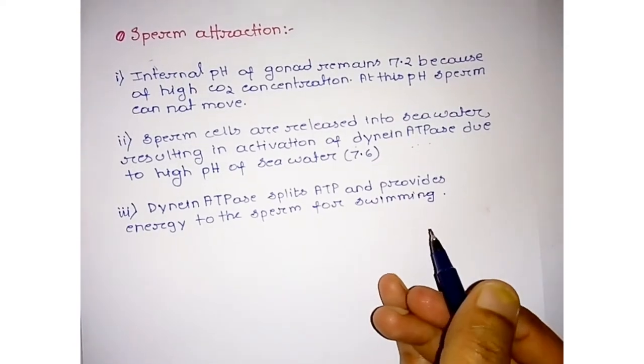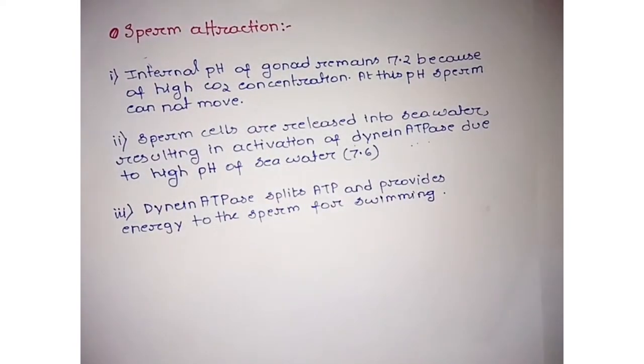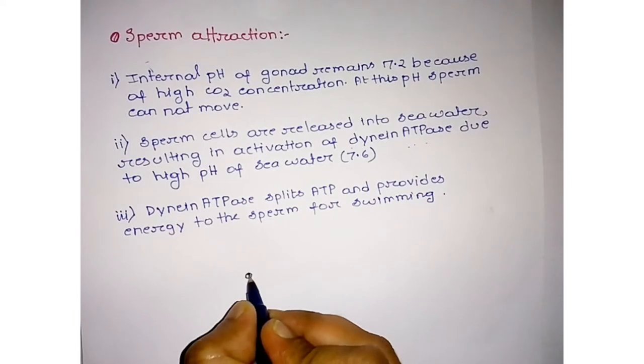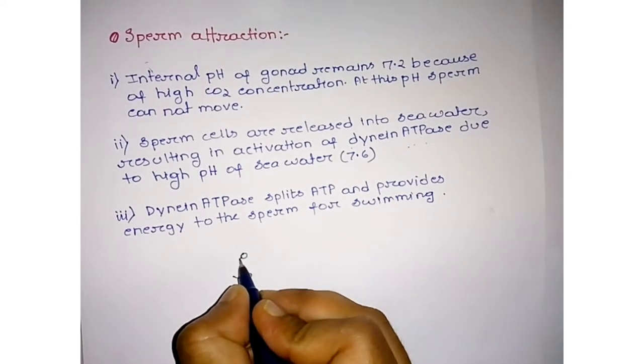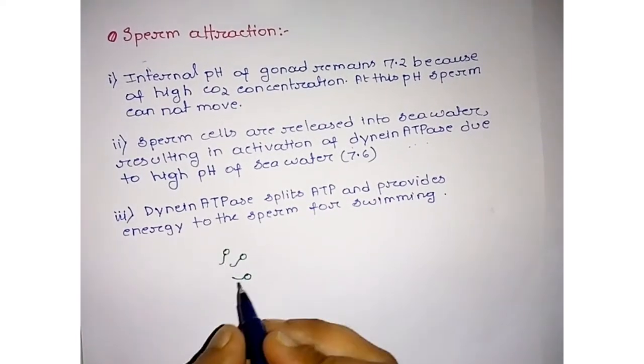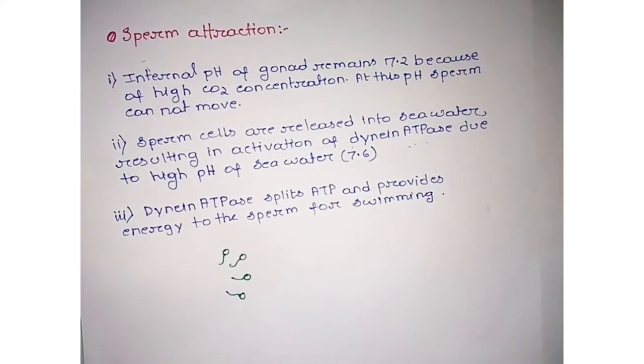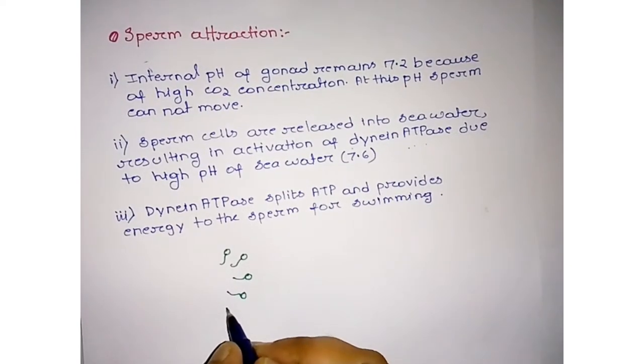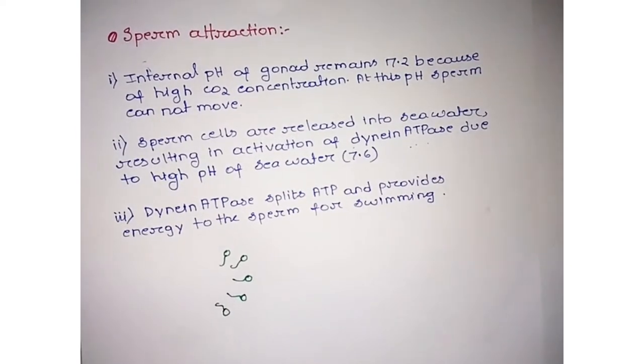But there is a problem. Sperm cannot show any directional movement towards the egg until resact, a small polypeptide, binds to it. Suppose these are sperm cells, and these sperm cells show vigorous, continuous movement.